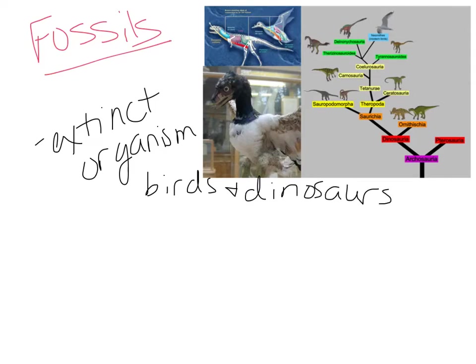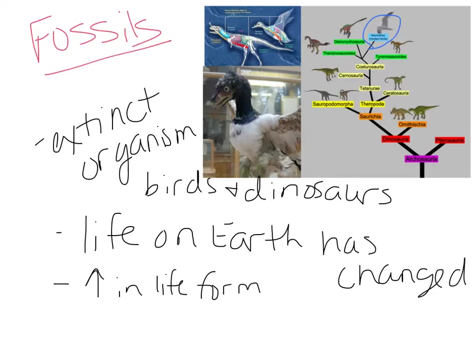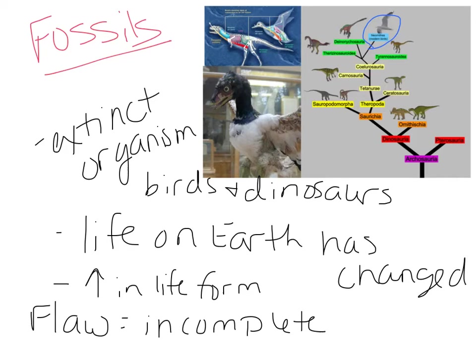You can see the phylogenetic tree created here on the left showing modern birds and their relationship to the dinosaurs. Fossils also show how life on Earth has changed and that there's been an increase in diversity over time. However, the fossil record does have a flaw — it is incomplete. We definitely do not have fossils of every single organism that has ever existed, and they may not have been fossilized. So the fossil record is not necessarily our best piece of evidence because of these gaps.